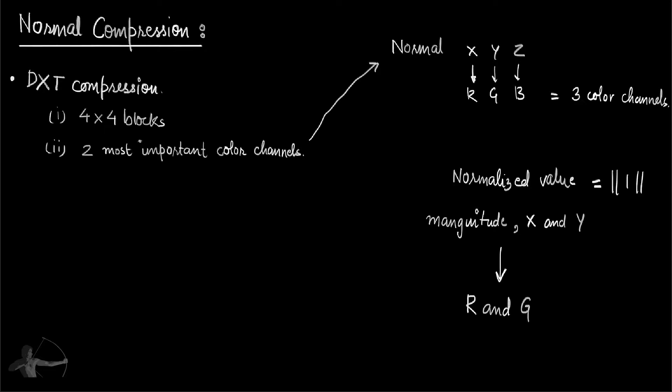So we will use R and G channel and we will ignore B channel, and we will calculate the Z value based on X Y, which are given to us by R and G channel.